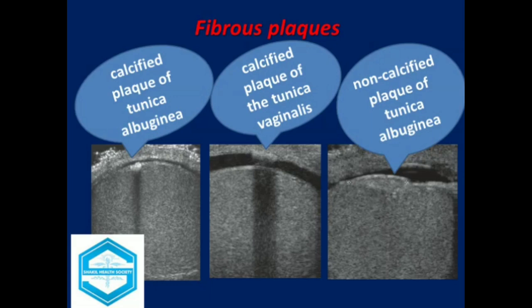Apart from testicular microlithiasis, calcification can develop on the tunica albuginea, tunica vaginalis, and can even be present as a palpable mass. It is referred to as plaque of the tunica. It may occur due to previous trauma or infection. The calcified plaques are easily identified on ultrasound, while non-calcified plaques appear as thickening in the tunica but are harder to visualize with ultrasound.